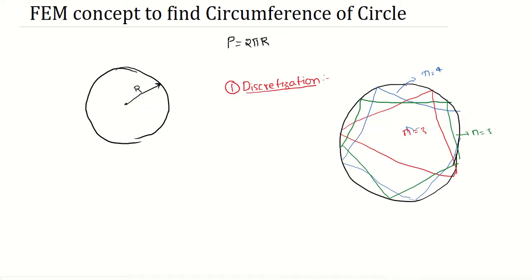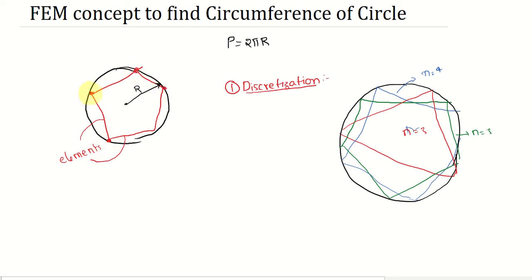Let us consider the circle divided into five parts — five subdomains. These subdomains are called elements, and these lines are the elements. The elements intersect at points called nodes. The process of dividing into subdomains is called discretization, and the entire divided structure is called a mesh.